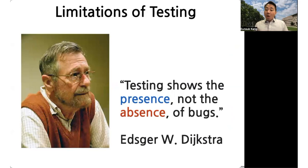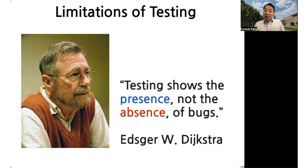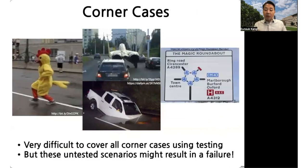One of the major limitations of testing, as captured in a well-known quote by computer scientist Dijkstra, is that testing can only be used to find bugs, not to prove their absence. In general, there are an infinite number of possible scenarios in a system, and it may be very difficult, if not impossible, for developers to come up with test cases that cover all those scenarios. This means there may be corner cases missed during testing that end up causing a failure in the software.